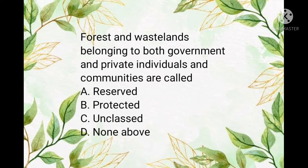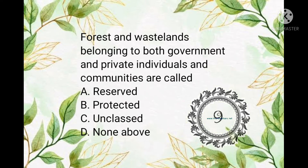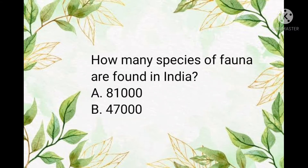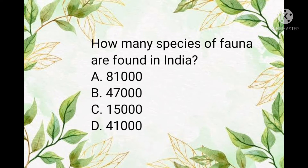The answer is Acinonyx jubatus. Question number five: forests and wastelands belonging to both government and private individuals and communities are called what? The answer is unclassed forests.